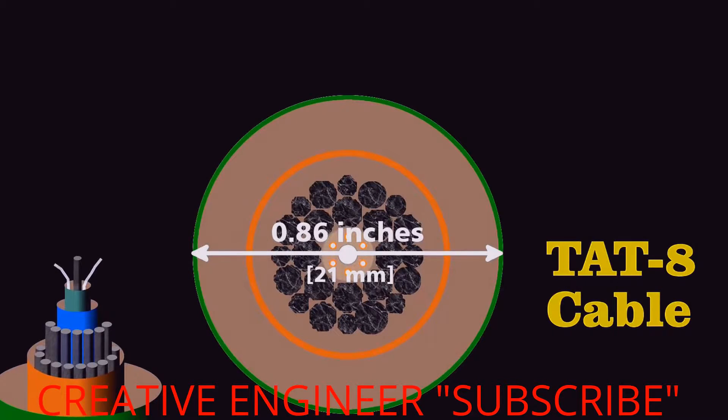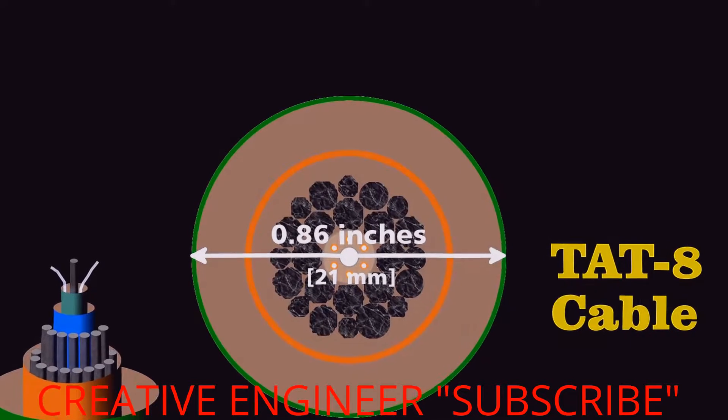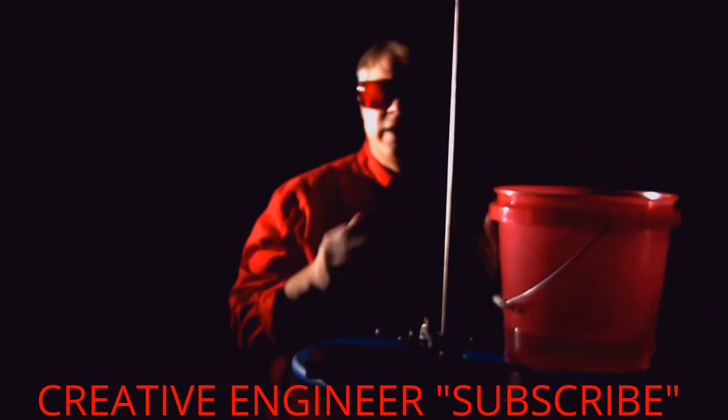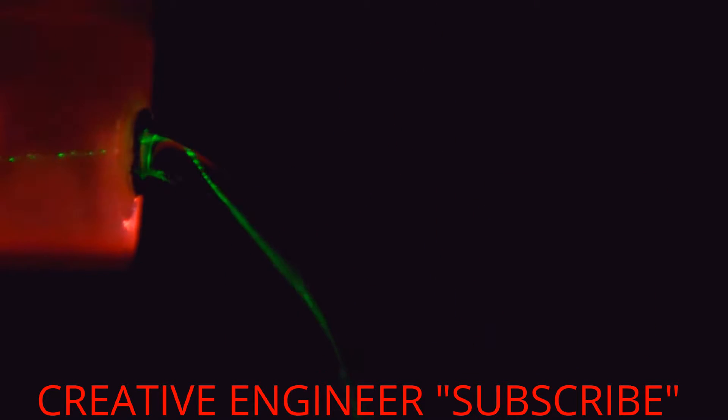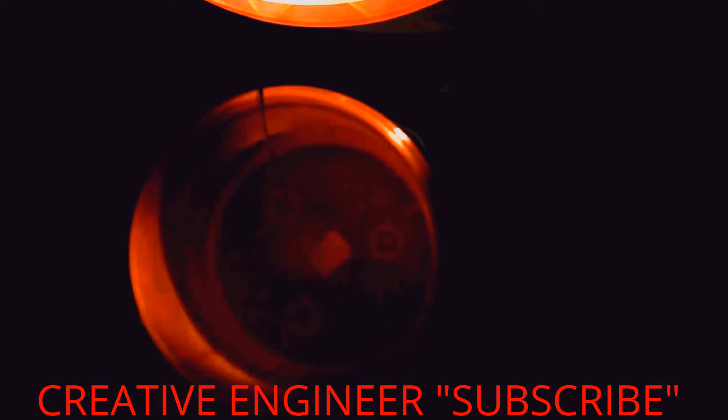The essence of how they send information through a fiber optic cable is very simple. I could have a prearranged signal with someone at the other end. Perhaps we'll use Morse code, and I just block the laser so that the person at that end sees flashes that communicate a message.